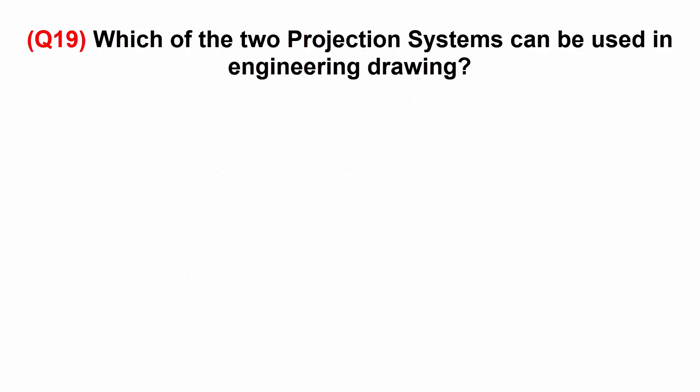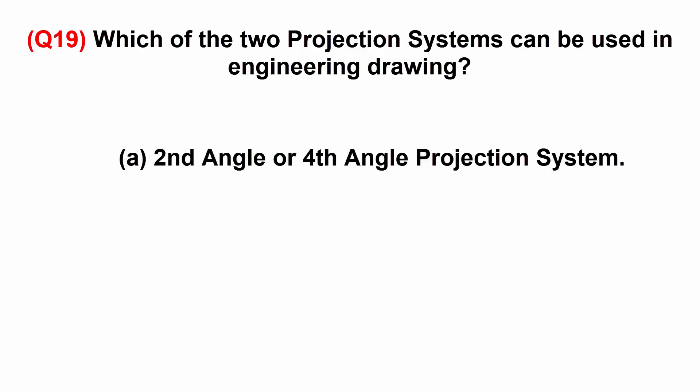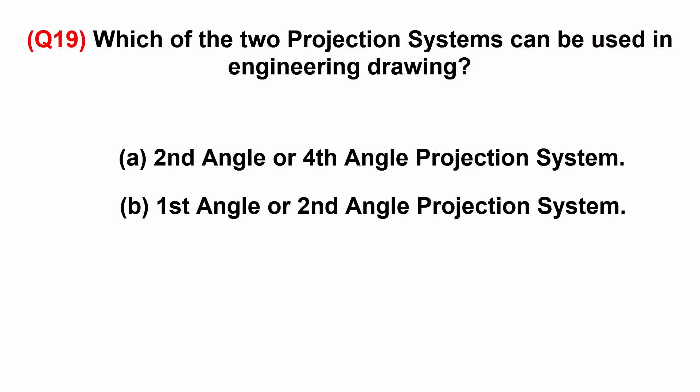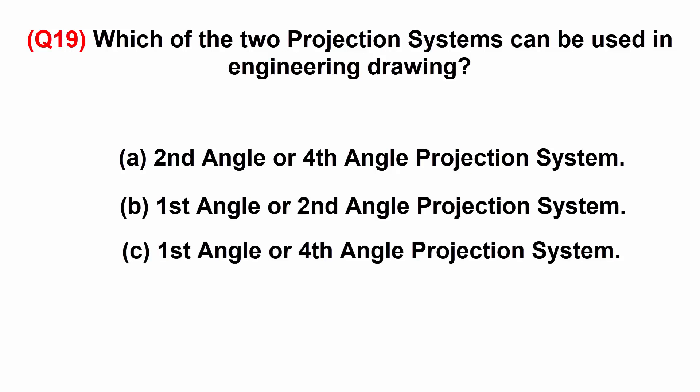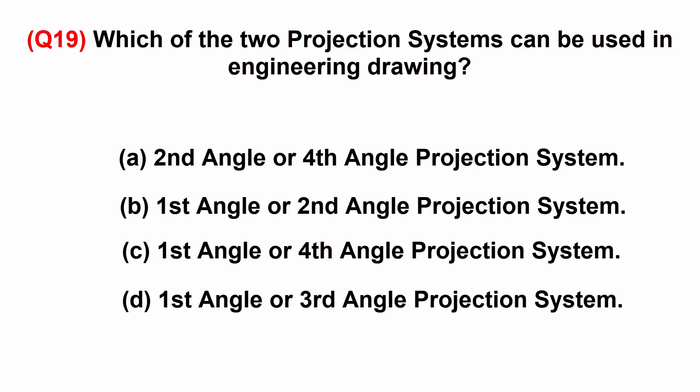Which of the two projection systems can be used in engineering drawing? A: second angle or fourth angle projection system. B: first angle or second angle projection system. C: first angle or fourth angle projection system. D: first angle or third angle projection system.